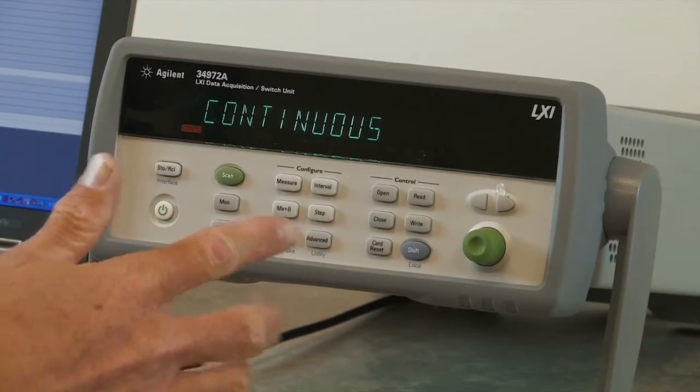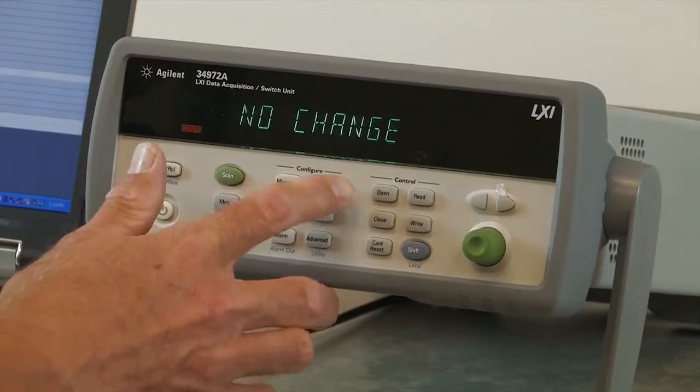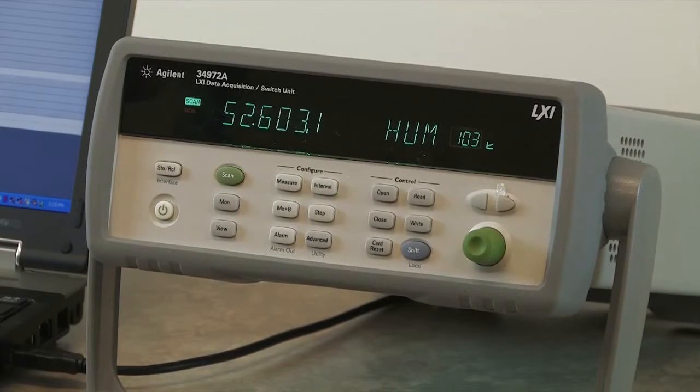We could also set up alarms. We're not going to do limit testing for this particular example. Let's go ahead and start our scan. So right now, every five seconds, you may be able to hear the relays—it will go off and do a scan of the temperature in the room, the voltage being applied to the sensor, and also read back the voltage and scale it.